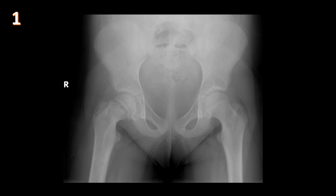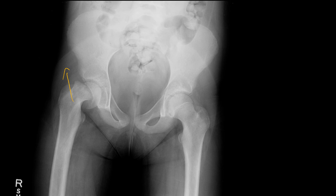First case: we have an AP view of a skeletally immature patient and we see widening of the proximal femoral growth plate on the right side compared to the left, with minimal slippage — the femoral neck is going superior in relation to the femoral head, which is still articulating with the acetabulum. Follow-up shows progressive slippage of the femoral neck with persistent widening of the growth plate.